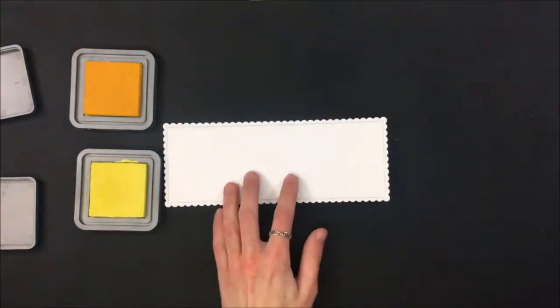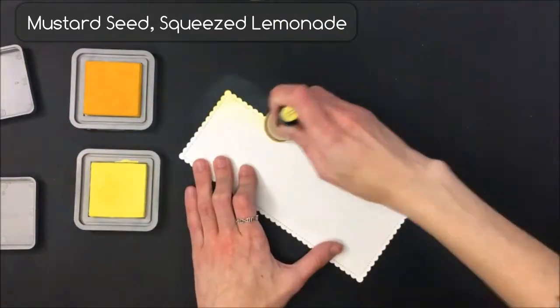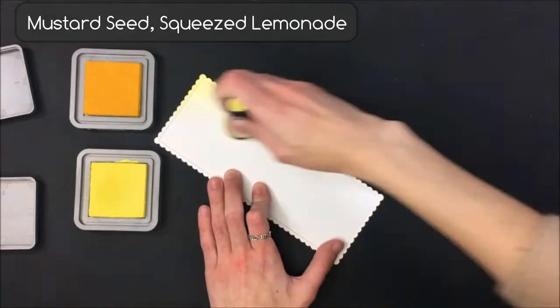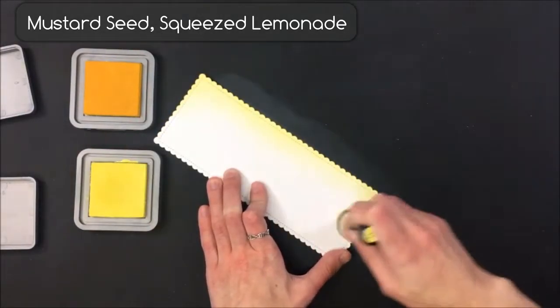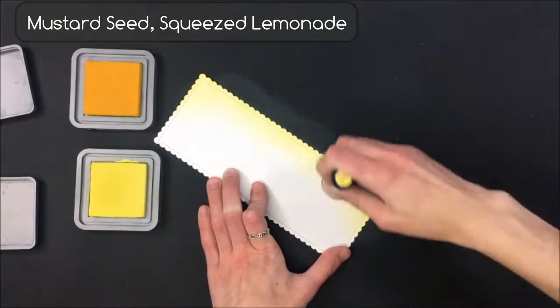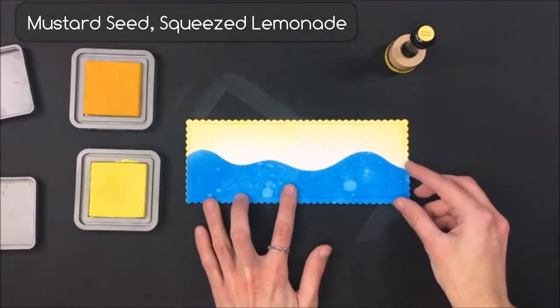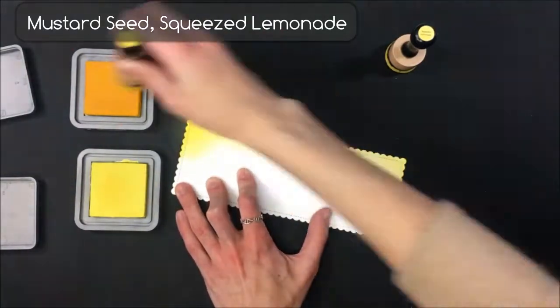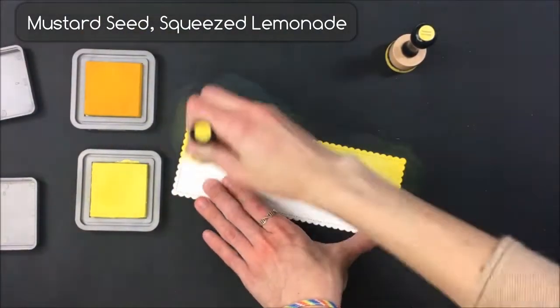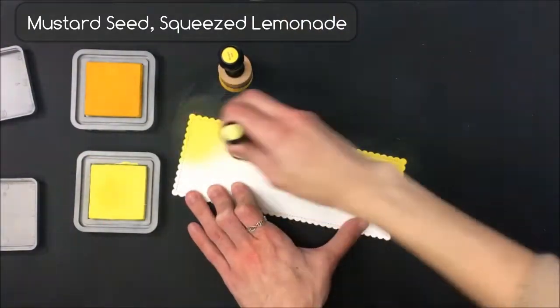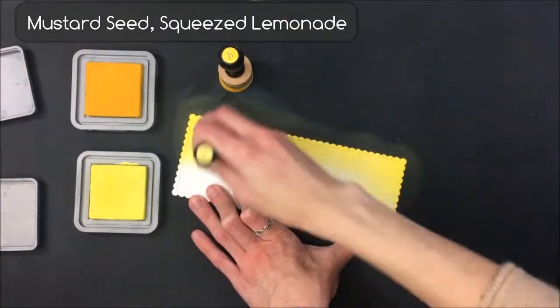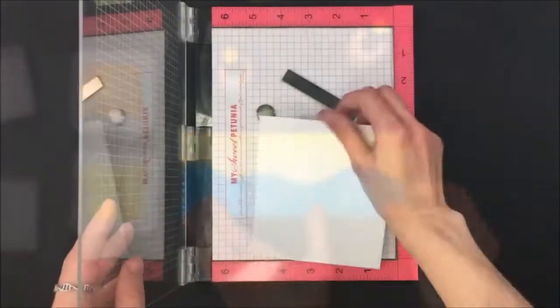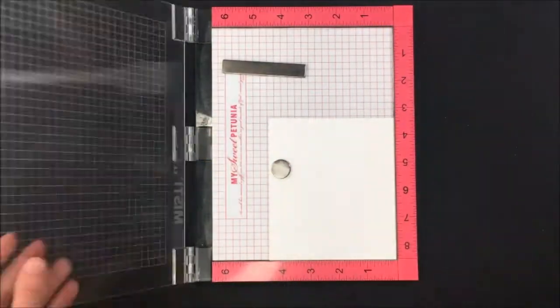Then I'm going to come in and do the sky on the other panel that I had cut. I don't often use yellow for my skies, I usually use tumbled glass, but I wanted to do something more bright and cheerful. I started with squeezed lemonade and I decided I wanted to pump it up a little bit so I added some mustard seed and then came back in with the squeezed lemonade to blend that out towards where the water is going to be.